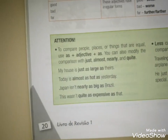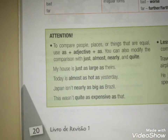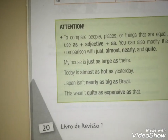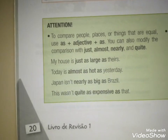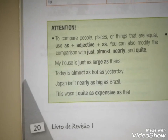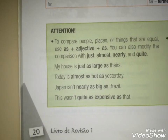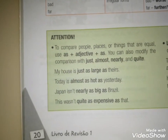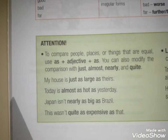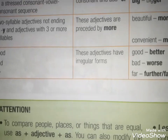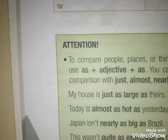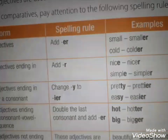Para comparar pessoas, coisas, lugares que têm o mesmo grau, a gente usa o adjetivo sem flexioná-lo. Por exemplo: a minha casa é tão grande quanto a deles. Hoje está tão quente quanto ontem. O Japão não é tão grande quanto o Brasil. Isso não é tão caro quanto aquilo. É AS mais o adjetivo mais AS — o adjetivo sem flexioná-lo, sem colocar smaller: AS small AS.